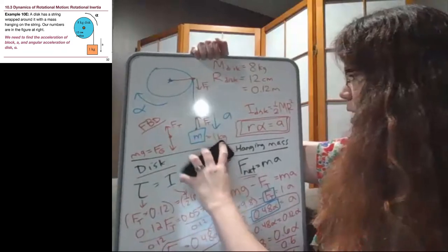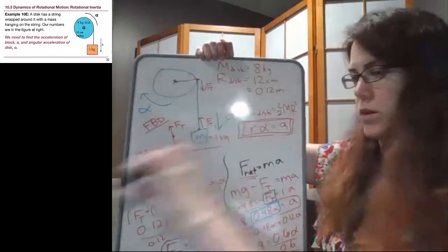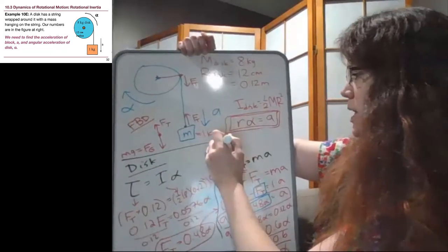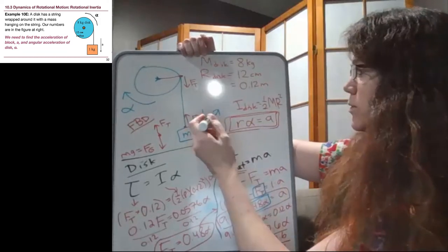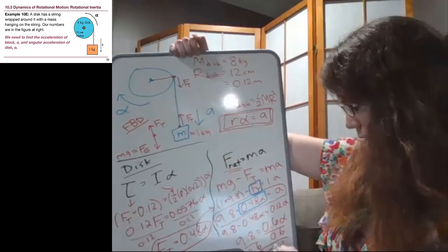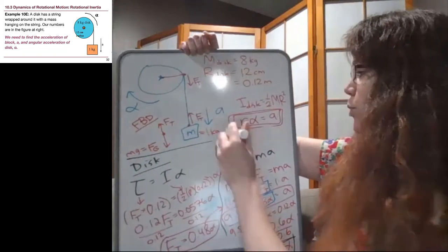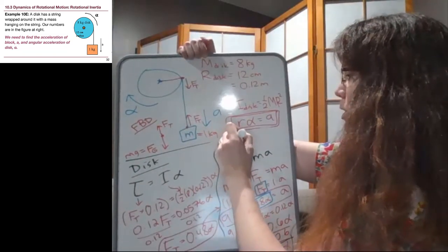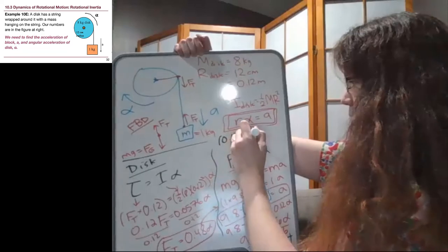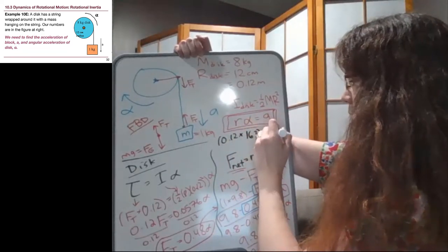And so the last step here is that if we want, first of all, we have alpha now. That's done in the bottom corner. And we can plug in 0.12 times that 16.3 to get A.